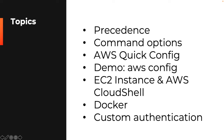Then we'll look at each of the precedence levels actually set up. We'll look at command options, and just after that, we'll also look at environmental variables. Quick config, which is actually AWS configure. I'll run a demo on that showing you how to set up your environment using the access key and secret access key from the console. We'll look at EC2 instances as well as AWS Cloud Shell, and how to use the STS caller identity to figure out who exactly we are.